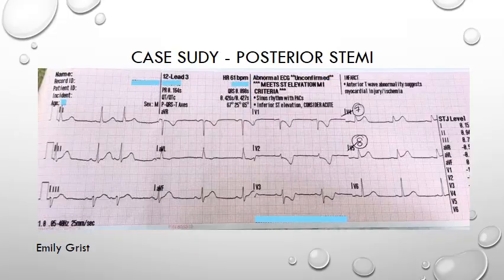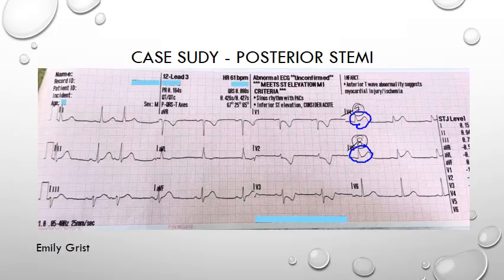Emily chose to use leads V4 and V5 to record V7 and V8, which is fine — it's not the choice of leads that are important, it's the ST elevation of 0.5 millimeters or more we are looking for to confirm posterior STEMI. From this ECG we can see that elevation in V7 and V8, probably a little more than 0.5 millimeters, in both leads — and that all but confirms this as a posterior infarction. The computer interpretation now reads this as meeting ST elevation criteria, and our treatment for this patient will be very different than if the ST depression had just been from an ischemic cause.